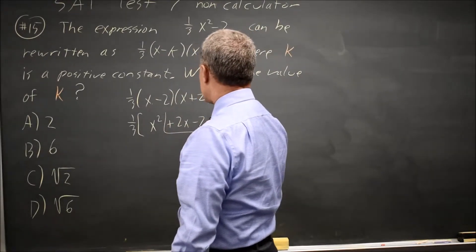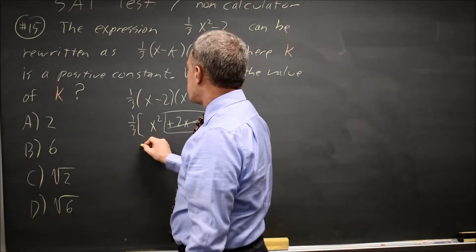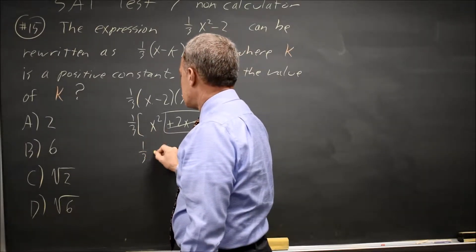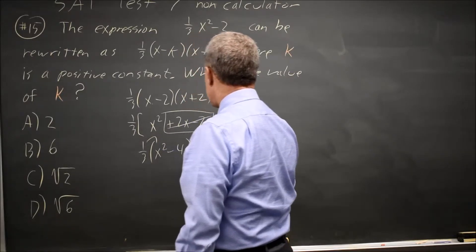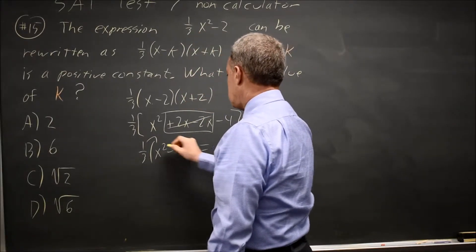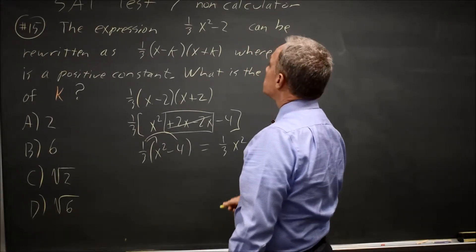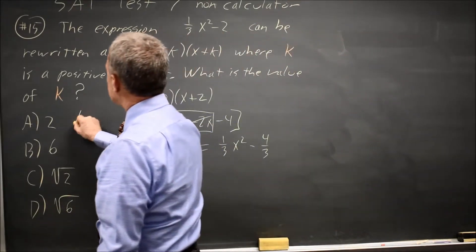The two middle terms, 2x and negative 2x, cancel to 0. So that's 1/3(x² - 4). Distributing, I get 1/3 times x², and 1/3 times negative 4 is minus 4/3, which is not the same as 1/3 x² minus 2. So that's wrong.